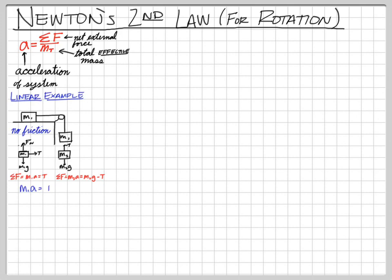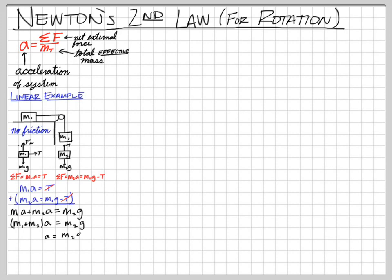Writing it out: M1 times acceleration equals tension, meaning tension is the only thing accelerating mass one. M2 times acceleration equals the weight minus tension. Adding these two equations, tension cancels, giving us M1·A + M2·A = M2·G. Factoring out A: (M1 + M2) times acceleration equals M2 times G. Solving for acceleration: A = M2·G divided by (M1 + M2).